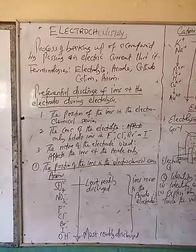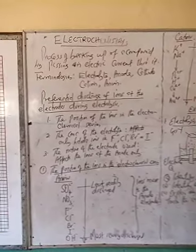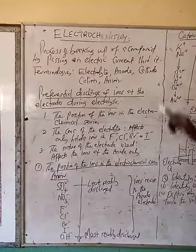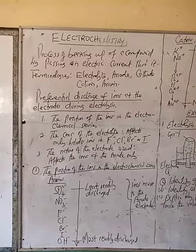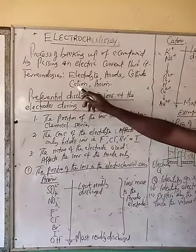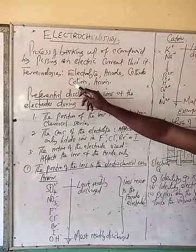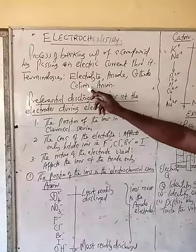Anode is the positive terminal of the electrode. Cathode is the negative terminal of the electrode. Cations are the positively charged ions.